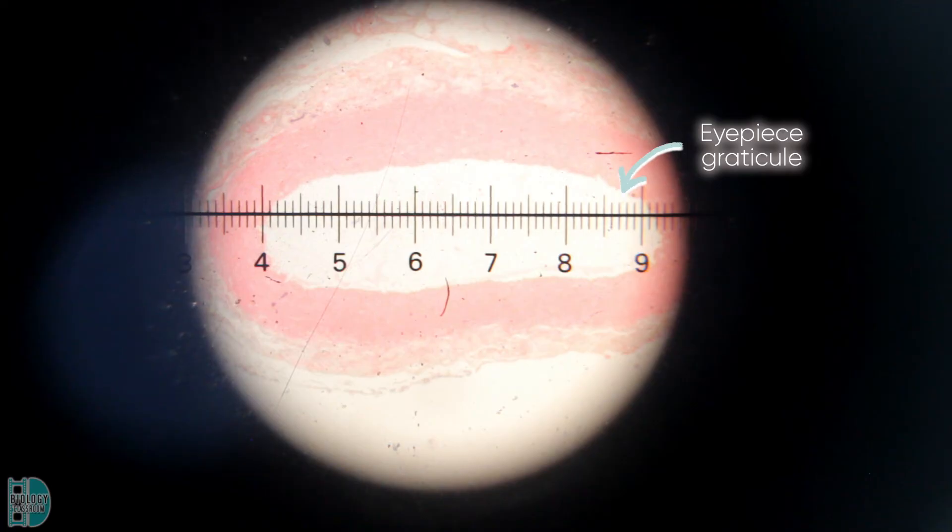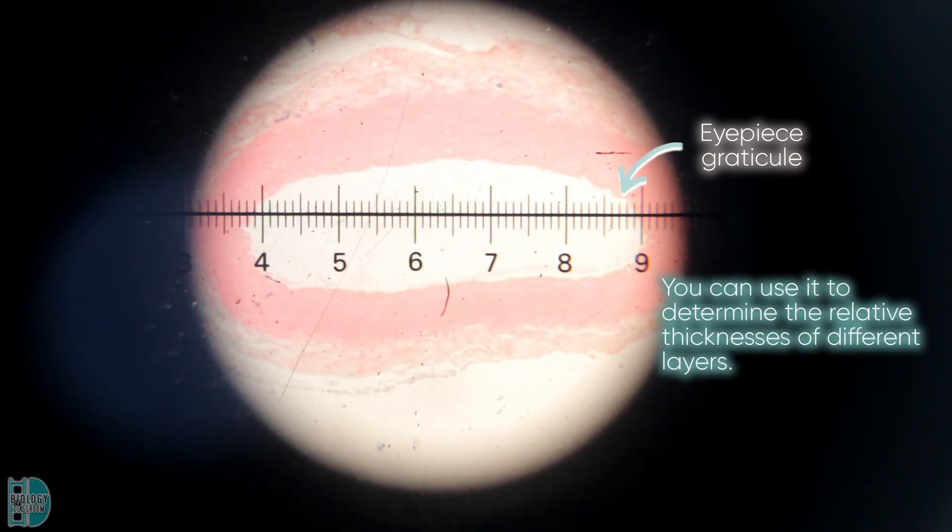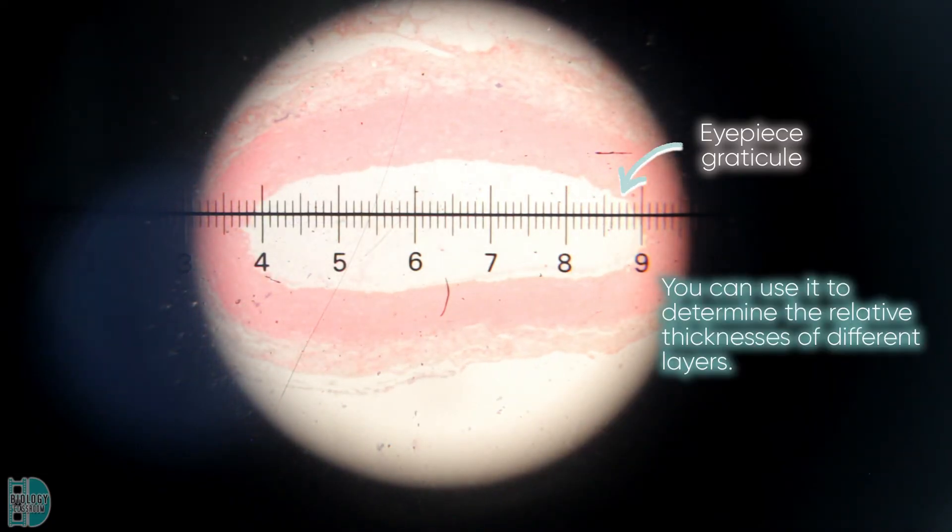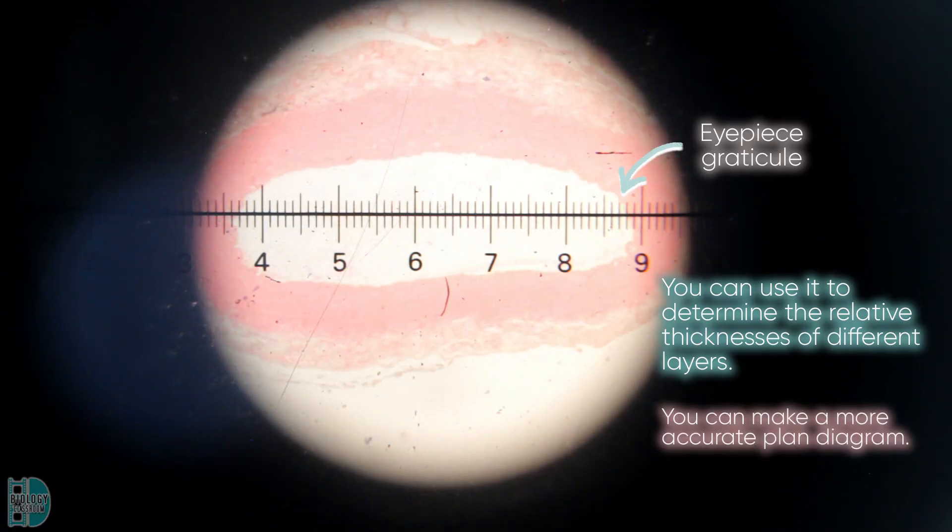Eyepiece graticule is usually provided in the examination. Apart from calibrating it for measurement, it is also useful if you want to work out the relative thicknesses of different layers. For example, when you are making a low-power drawing, you can use the graticule to help determine how much thicker a layer should be compared to another layer. By doing this, you can make a much more accurate plane diagram.